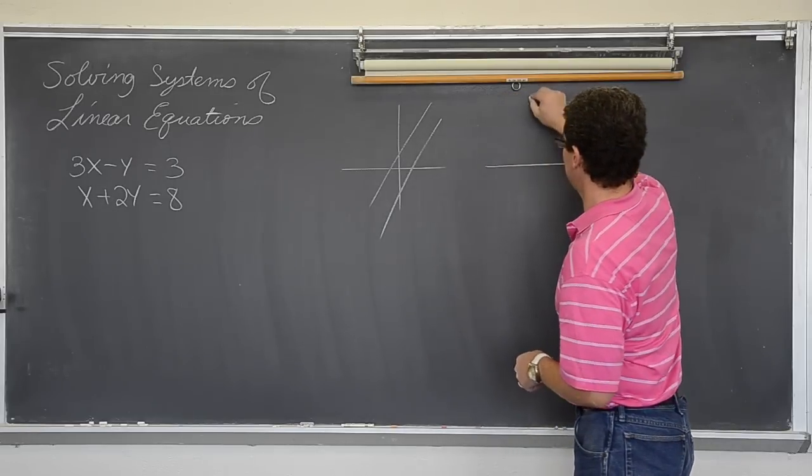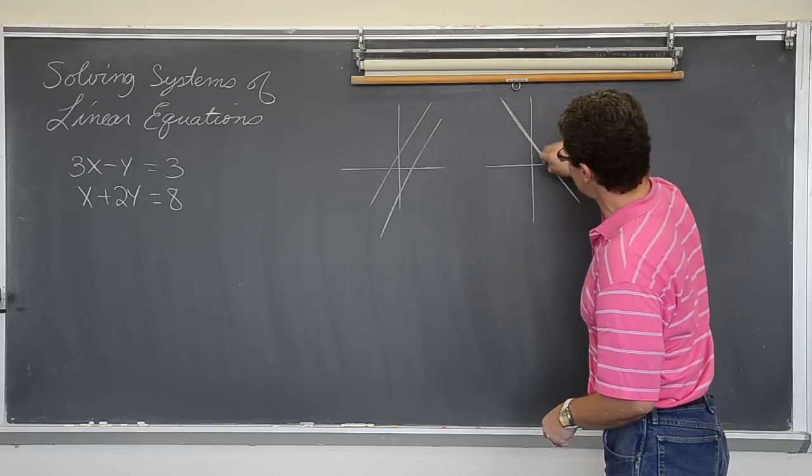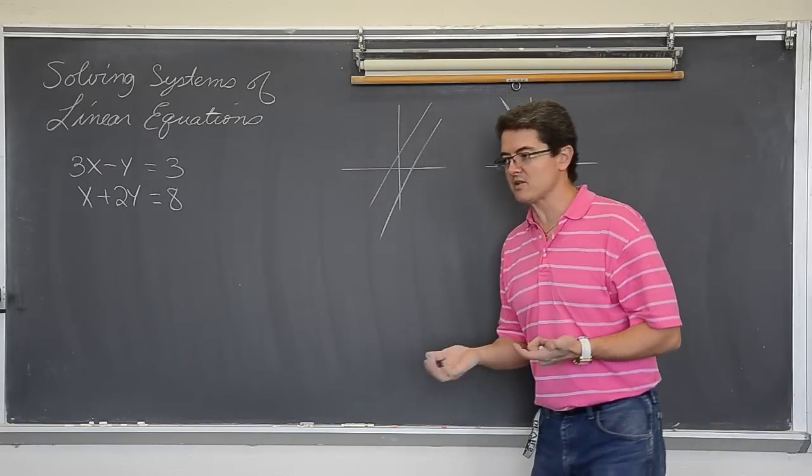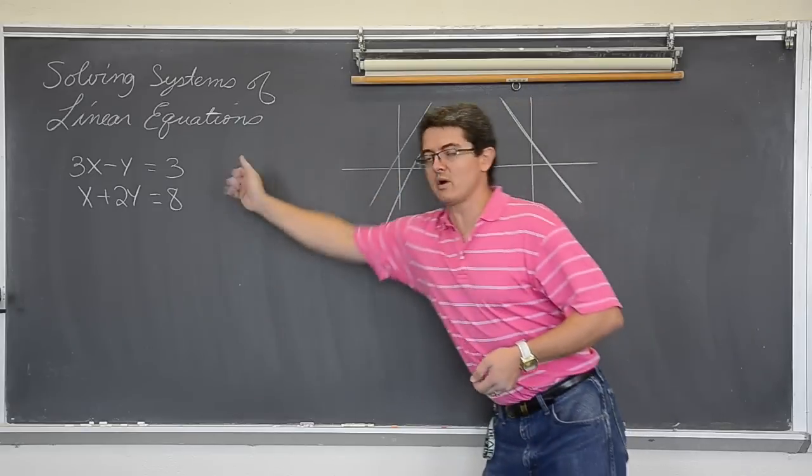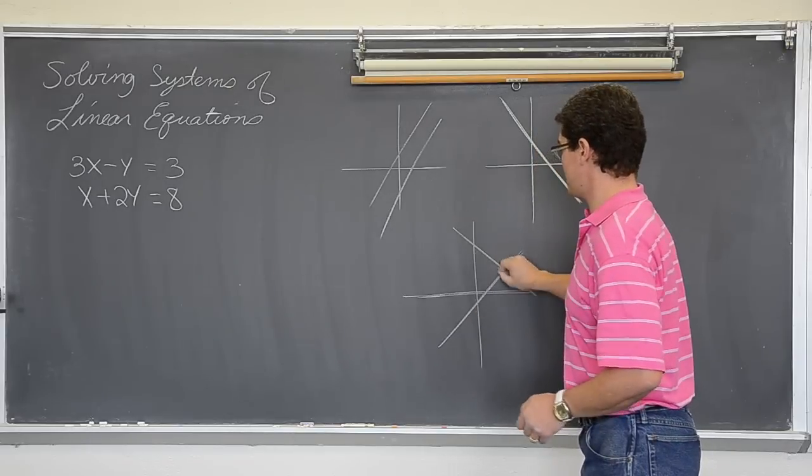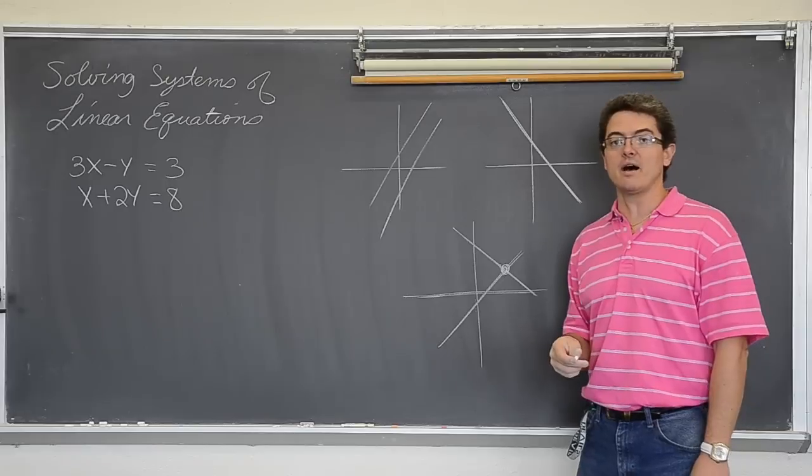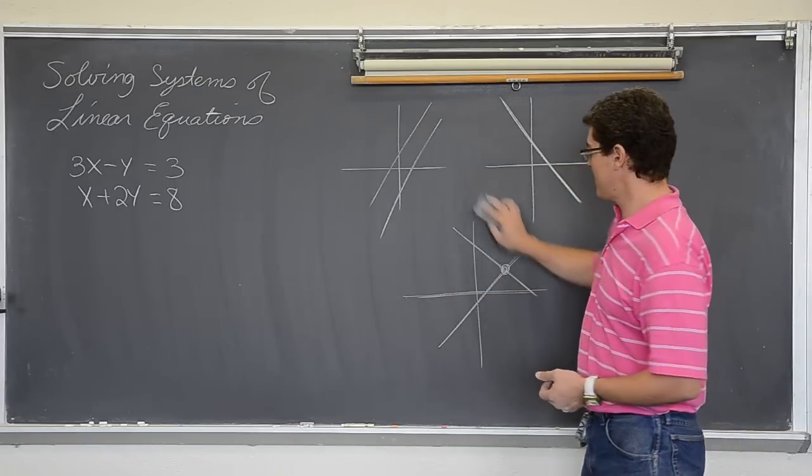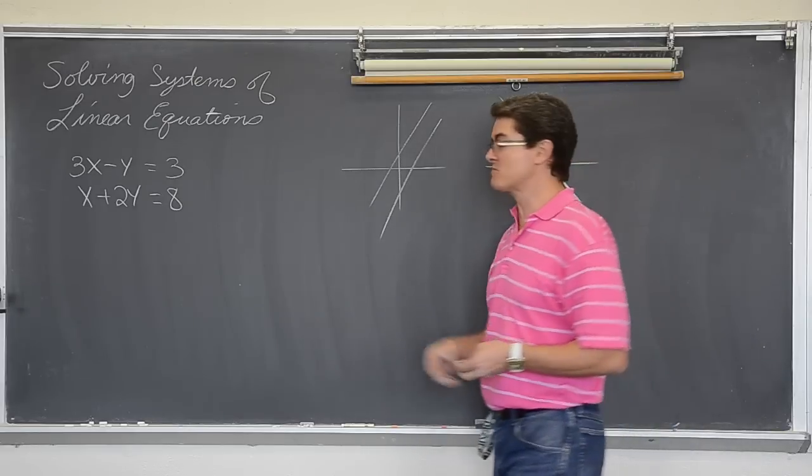You can have a situation where you have a line and then the other line lands right on top of it. That is going to be called many solutions, or as our books call them, dependent. Then of course, you can simply have a situation where the two lines are going to cross at a certain x and y value, which we are going to find two ways with this one example.